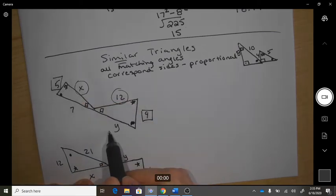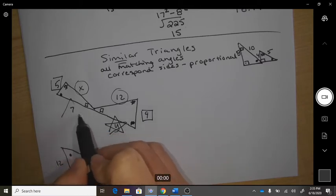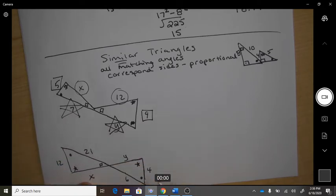And here, y is across from the star and 7 is across from the star. Okay, so they need to have all the same ratios.